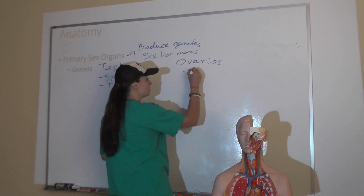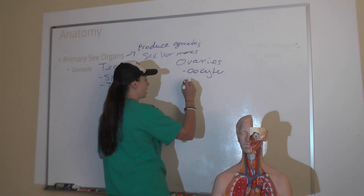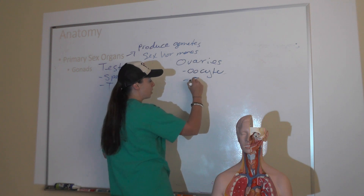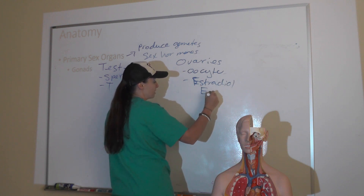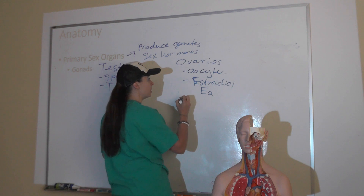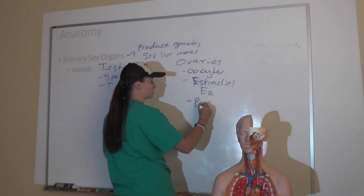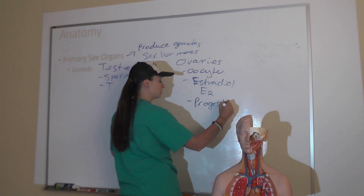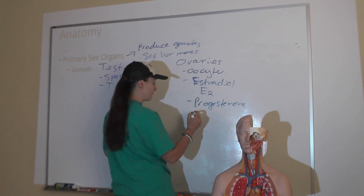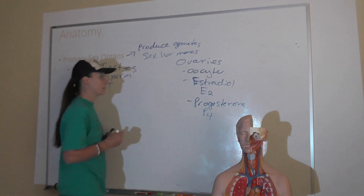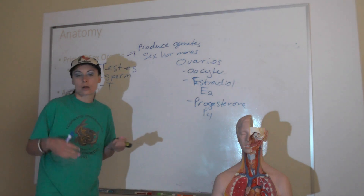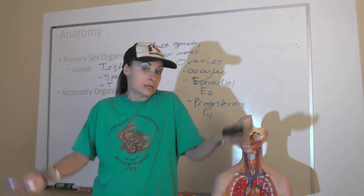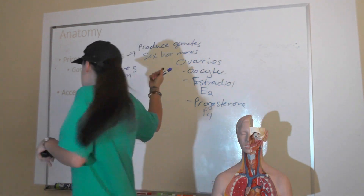In the ovaries, the gamete is the oocyte, and the sex hormones are estrogen, or estradiol — estradiol is the chemical, abbreviated E2 — and progesterone, which is progestation, abbreviated P4. Our accessory organs are all of the organs that are going to assist in reproduction in some way outside of producing our gametes and sex hormones.